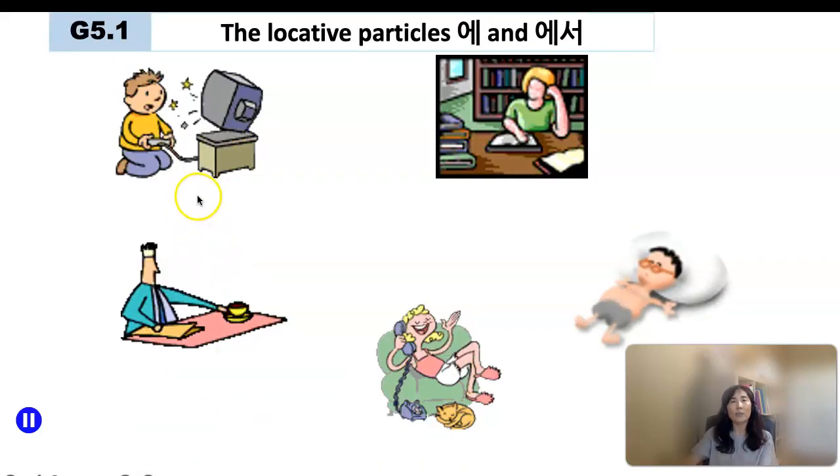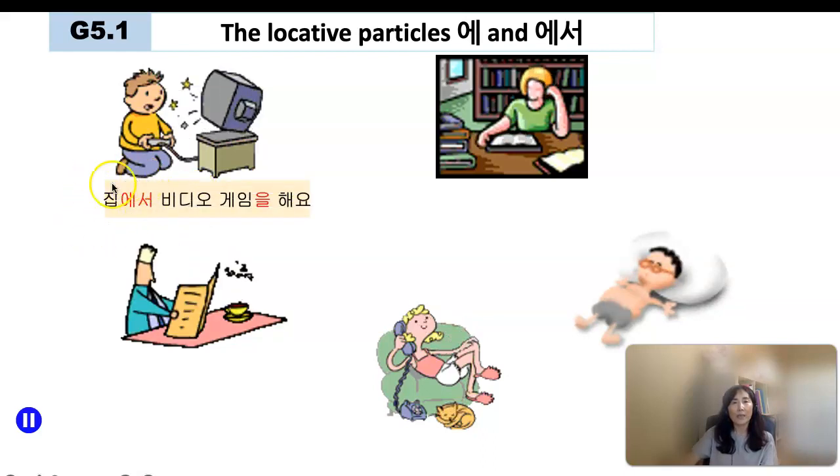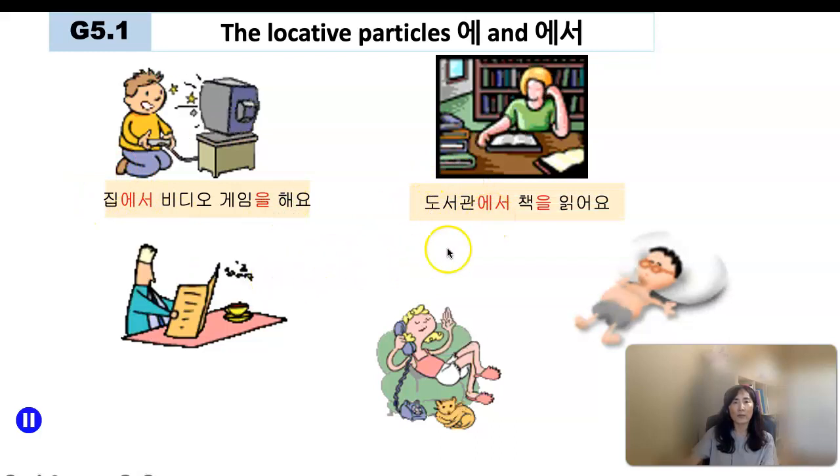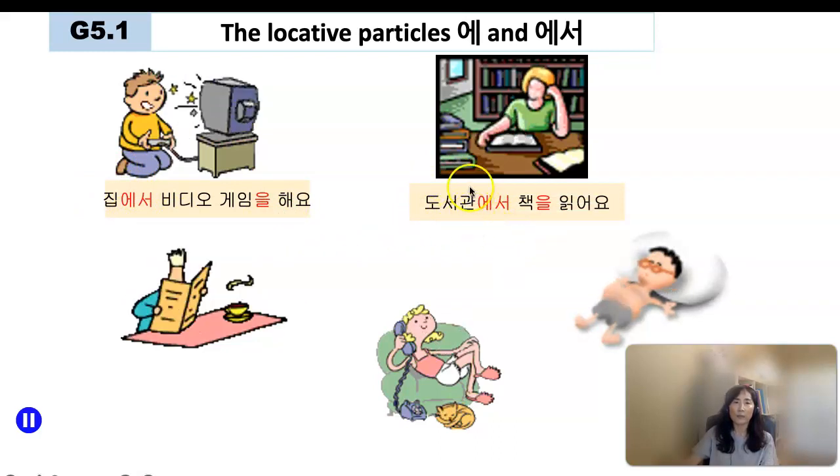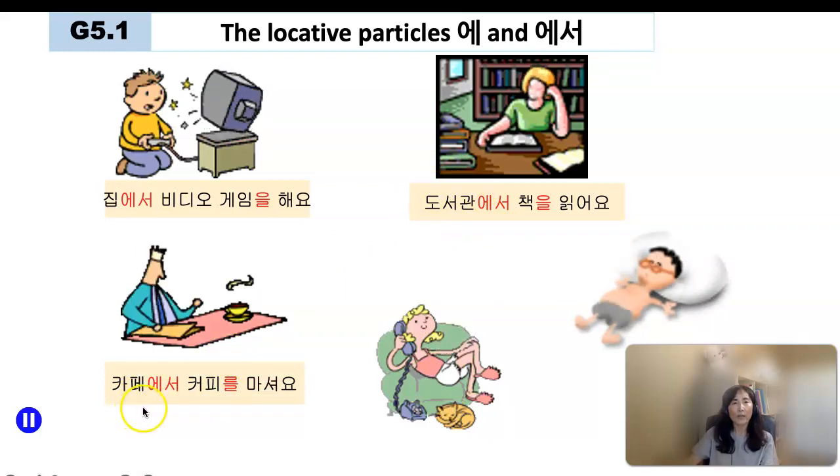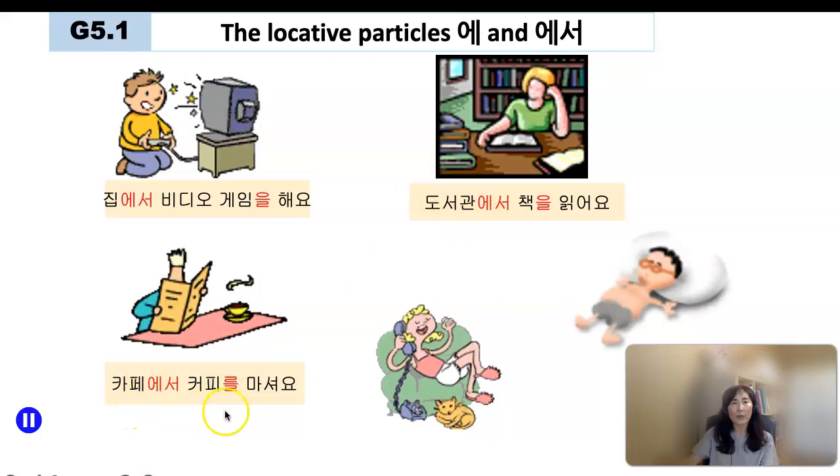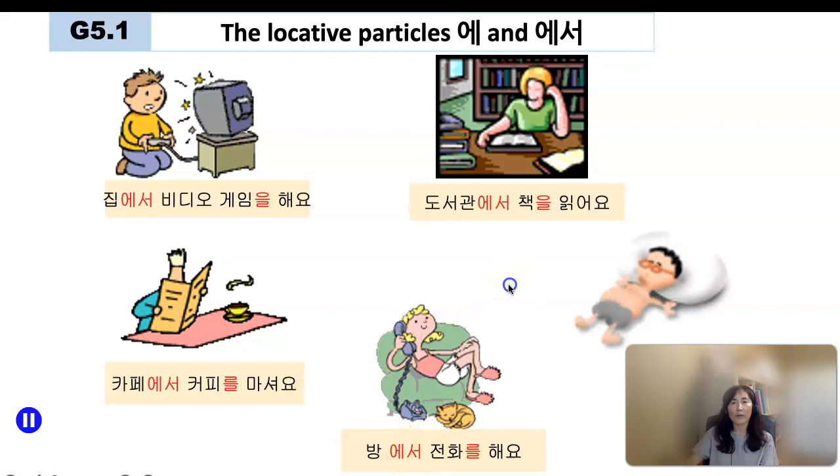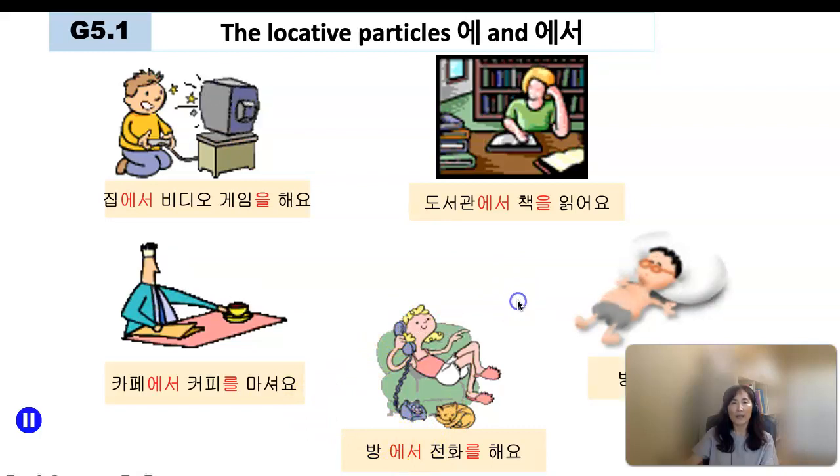Now I want you to add 에 or 에서 properly. 집에서 비디오 게임을 해요. Someone is playing video games at home. 집에서. 도서관에서 책을 읽어요. Someone is reading a book at the library. 도서관에서. Someone is drinking coffee at a cafe. 카페에서 커피를 마셔요. 방에서 전화를 해요. 방에서 자요.